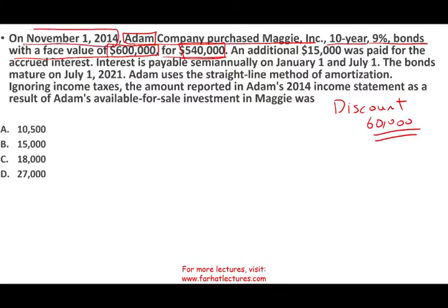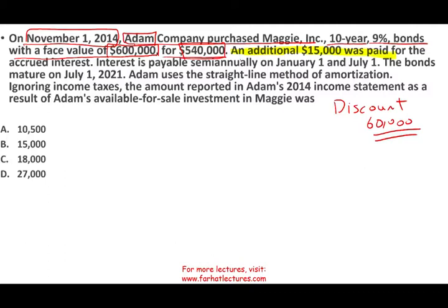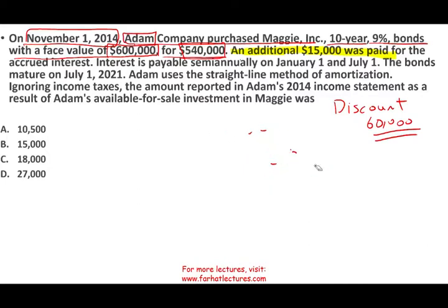This bond is at a discount, and the discount is $60,000. The date is important here — November 1st. An additional $15,000 was paid for the accrued interest. Be careful how the information is given: you are told additional interest was paid, so it's not part of the $540,000. The information could alternatively be given as you paid $555,000 including $15,000 of interest — that would be the same information.